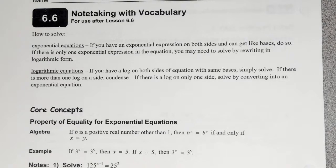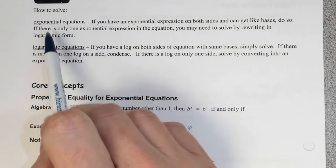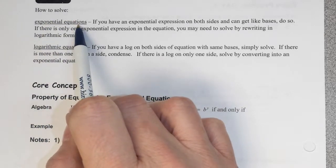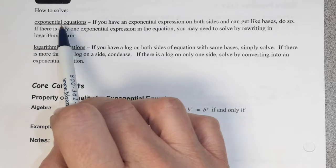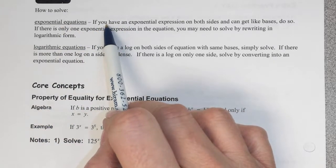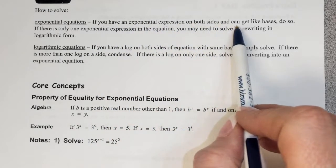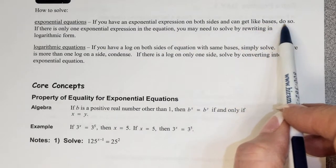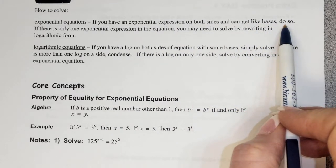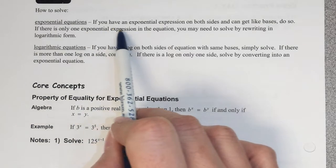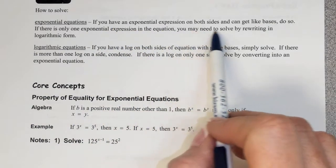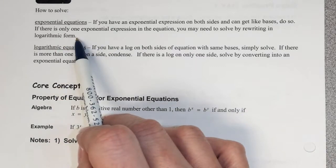All right, we're looking at section 6.6, page 181 in your student journal. We're going to look at how to solve exponential equations. The ones in warm-ups were pretty easy, but you should have noticed three different types. If you have an exponential expression on both sides and you can get like bases, you want to do so, because then you just set the exponential parts equal and solve. However, if there is only one exponential expression, you may need to solve by rewriting in logarithmic form.